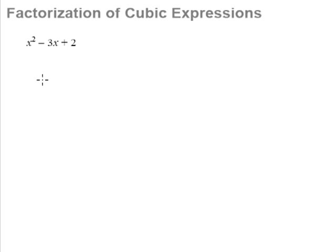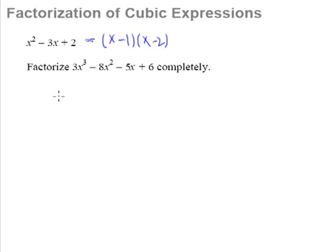I'm sure you have no problem factorizing a quadratic expression like this. A quadratic expression like this, you can factorize it to become (x minus 1) multiplied by (x minus 2). It's something very elementary you have learned before. How about a cubic expression like this one? You're supposed to factorize a cubic expression completely. This is a cubic expression; this is a quadratic expression — they are totally different. Therefore, you cannot use the same technique on a cubic expression.